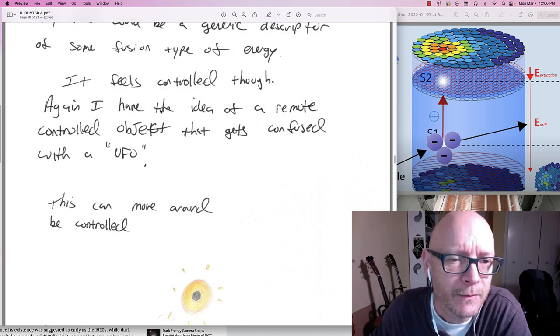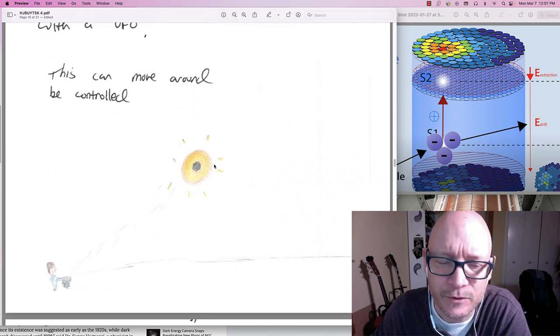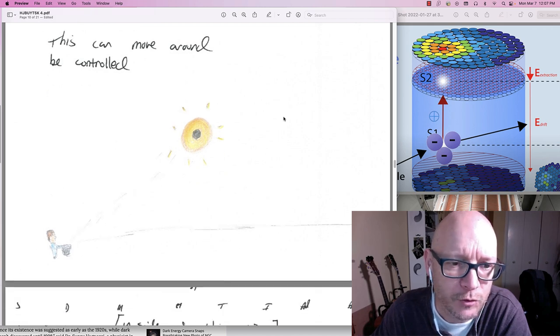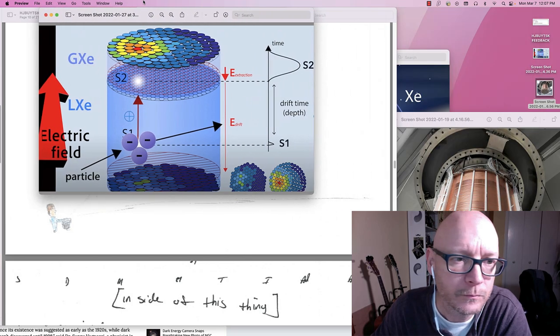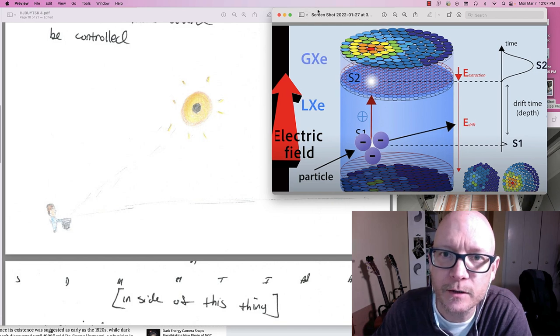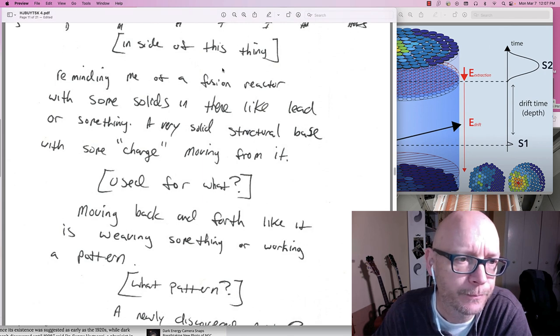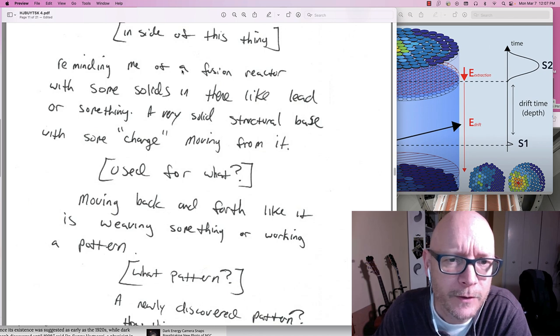Again. I have the idea of a remote controlled object. That gets confused with a UFO. Well. I think I was getting. I was keeping that out of my mind. Because I'm dealing with exotic energies here. This can move around. Be controlled. Well it is being controlled in here. Like this. Even though they are allowing the elements to interact. Inside of this thing. Is where I send myself.